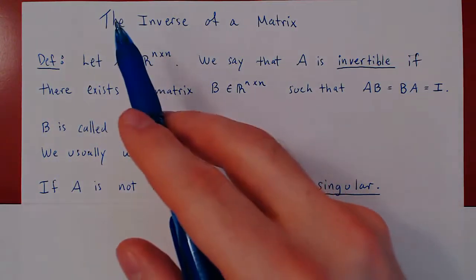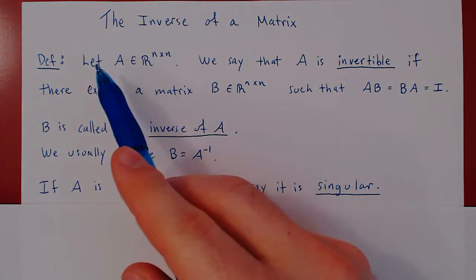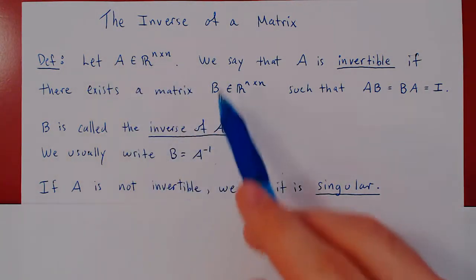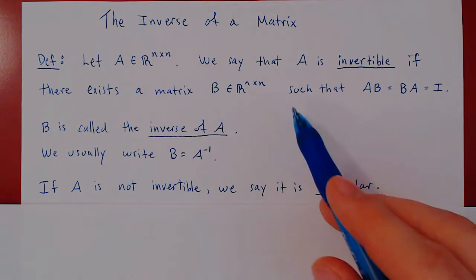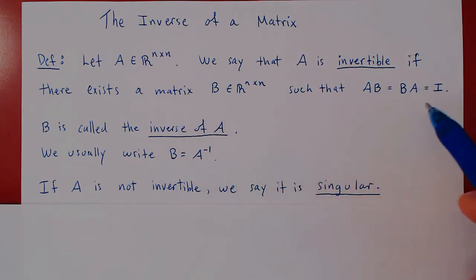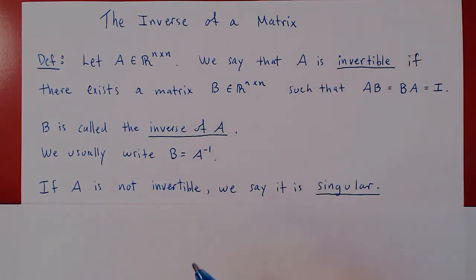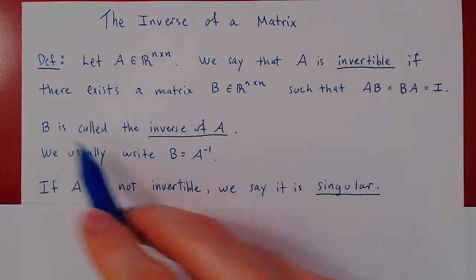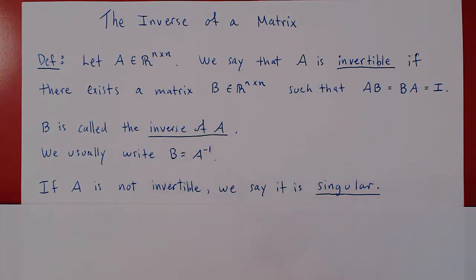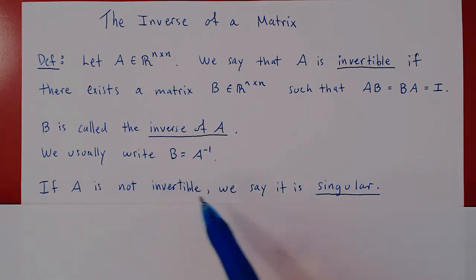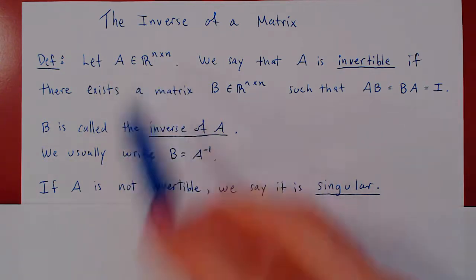In this video, we will discuss the inverse of a matrix. We take a square matrix A and say that A is invertible if there exists a square matrix B of the same size such that A times B equals B times A equals I, the identity matrix of the same size. If B exists, we call B the inverse of A, and we usually write B equals A to the negative 1 power. Not every matrix is invertible, and if a square matrix is not invertible, we say it is a singular matrix. The concept of invertibility only applies to square matrices.